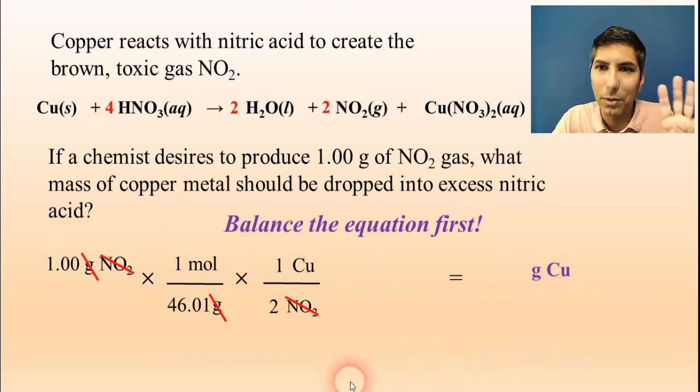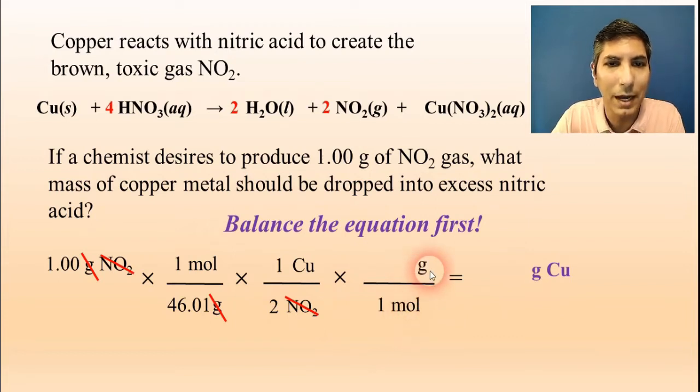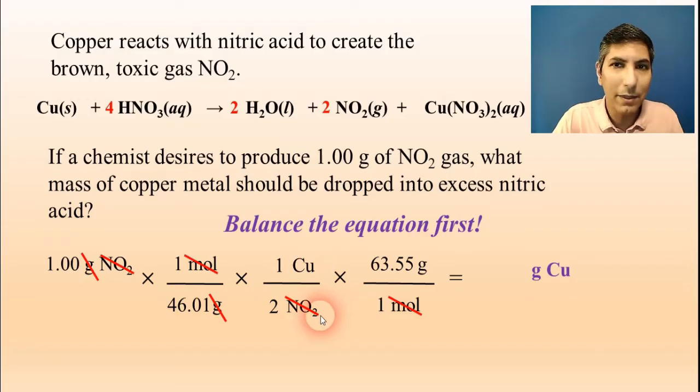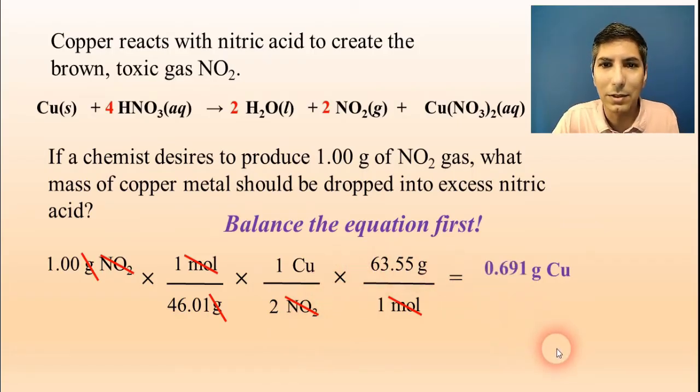Now I'm in moles of copper, but I want to be in grams of copper, so that's why I have to do step three, which is convert to final unit. The final unit I'm converting to is grams. In my last step, I have to put the one mole on the bottom, so moles will cancel, and grams on top. How many grams are in one mole of copper? Look at the periodic table. The atomic mass of copper is 63.55 grams in one mole. So I can cancel moles. Now I can do the mathematics on my calculator. I just take 1.00 divided by 46.01 divided by 2 times 63.55. When I get the answer, it is 0.691 grams of copper. That's how you solve these problems.